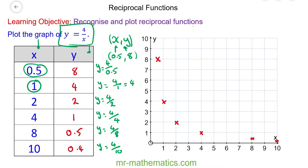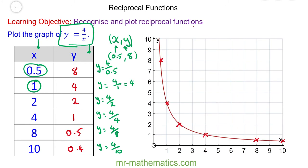Now we're going to join these points together to make a smooth curve. By looking at the graph you can see that the curve will never actually touch the y-axis. As x approaches 0, we have y is equal to 4 over 0, and anything divided by 0 is infinite. So it's impossible to draw a graph which goes up to infinity — this is one of the properties of a reciprocal function.